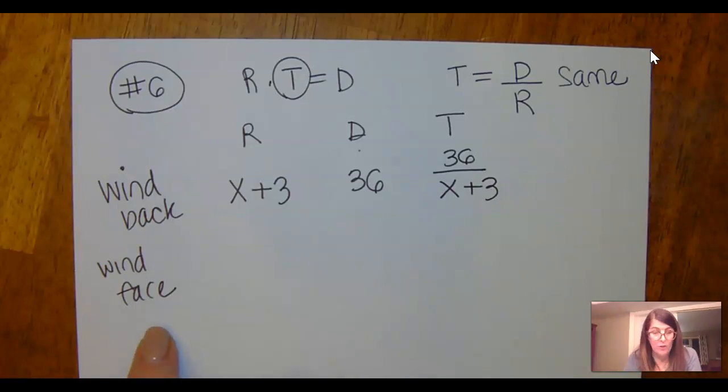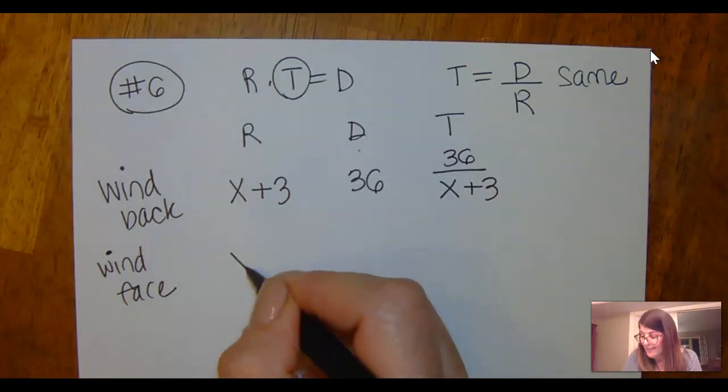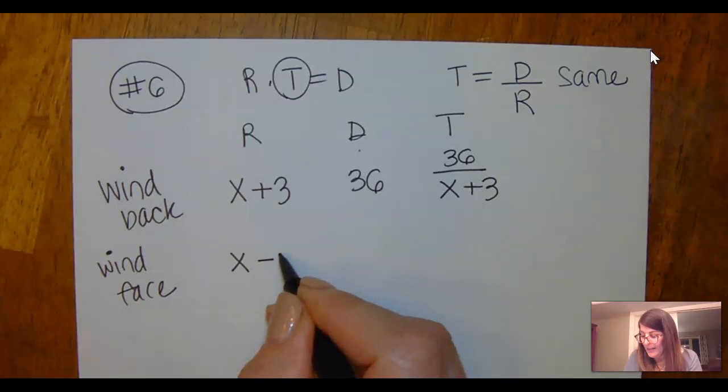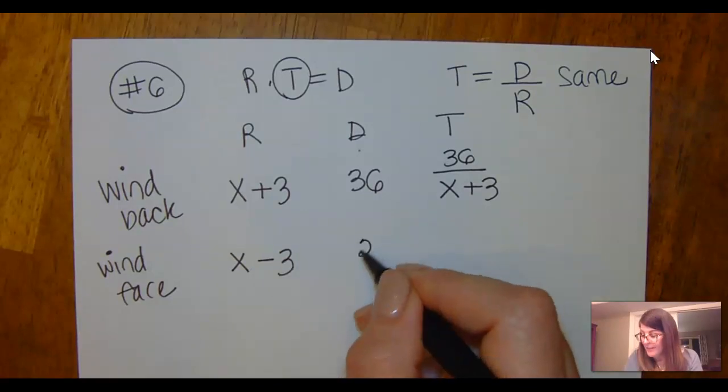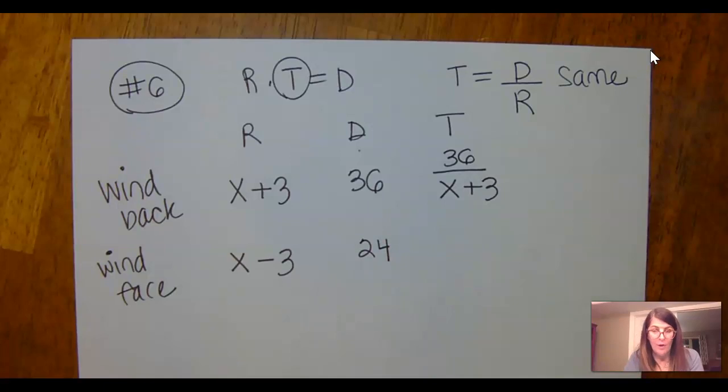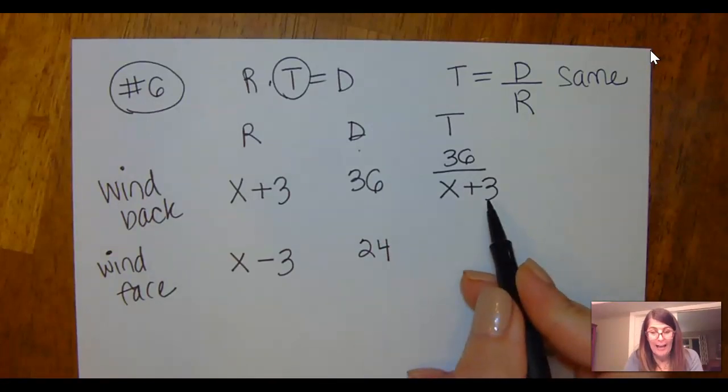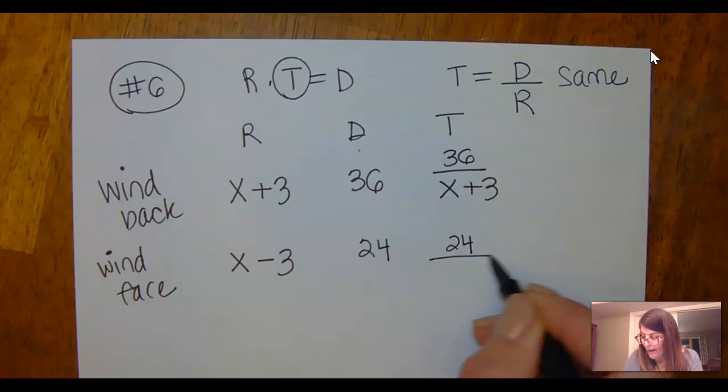Now when Lance is cycling with the wind at his face slowing him down, he still has his same speed x, but he's subtracting that wind speed. The distance he's going is 24, so the time is going to be 24 divided by the rate of x minus 3.